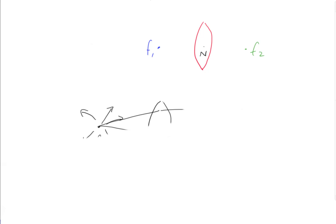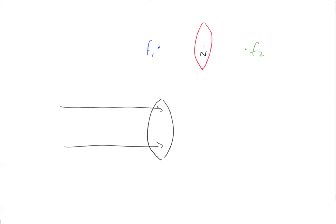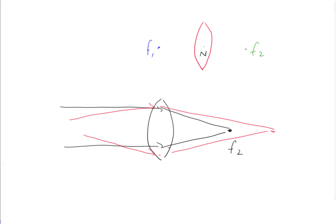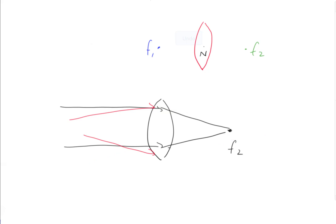What about f2? What f2 says is: if I have a lens and pass parallel light through it, that light will come to a point at f2. If diverging light hits the lens, it will come to focus behind f2. If converging light enters the lens, it will be focused in front of f2. But if exactly parallel light comes in, it will come to a focus precisely at f2.